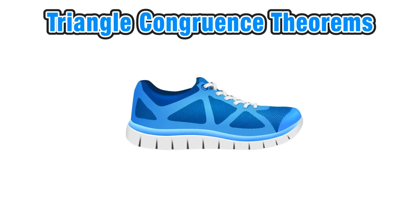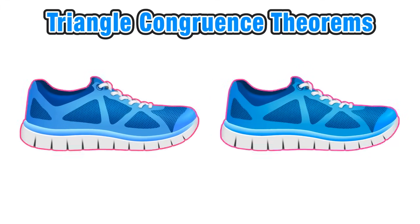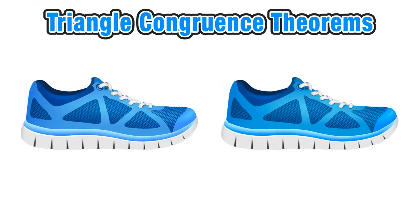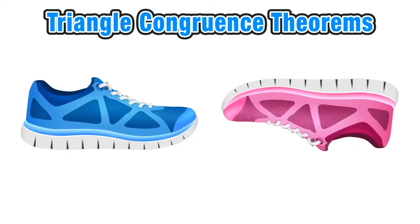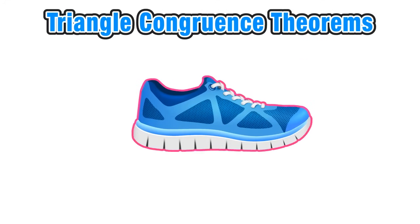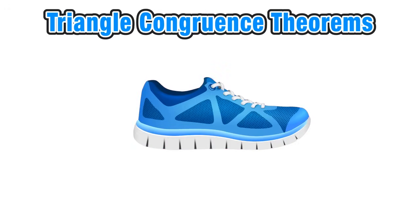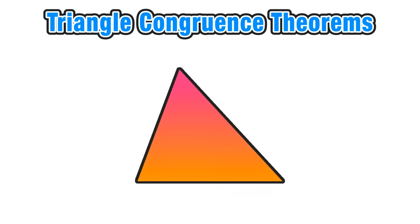Let's look at a running shoe. If I can somehow duplicate this running shoe and make an exact replica, I would say that these two shoes are congruent because they are exactly the same size and shape. Even if I change the color of one of the shoes or rotate it a certain number of degrees, it's still congruent to the original sneaker because it's the same size and shape. We want to extend this kind of thinking now to comparing triangles to see whether or not they are congruent.